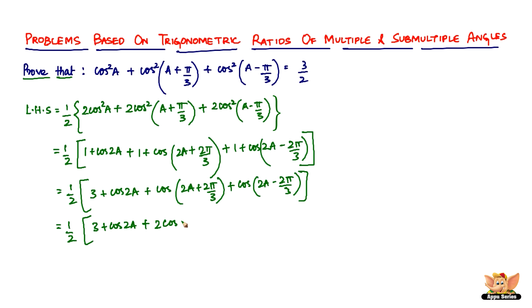So we're going to keep cos2a, and then this is nothing but 2cos(2a)cos(2π/3). The next step: we have 1/2[3 + cos2a + 2cos2a · cos(2π/3)].